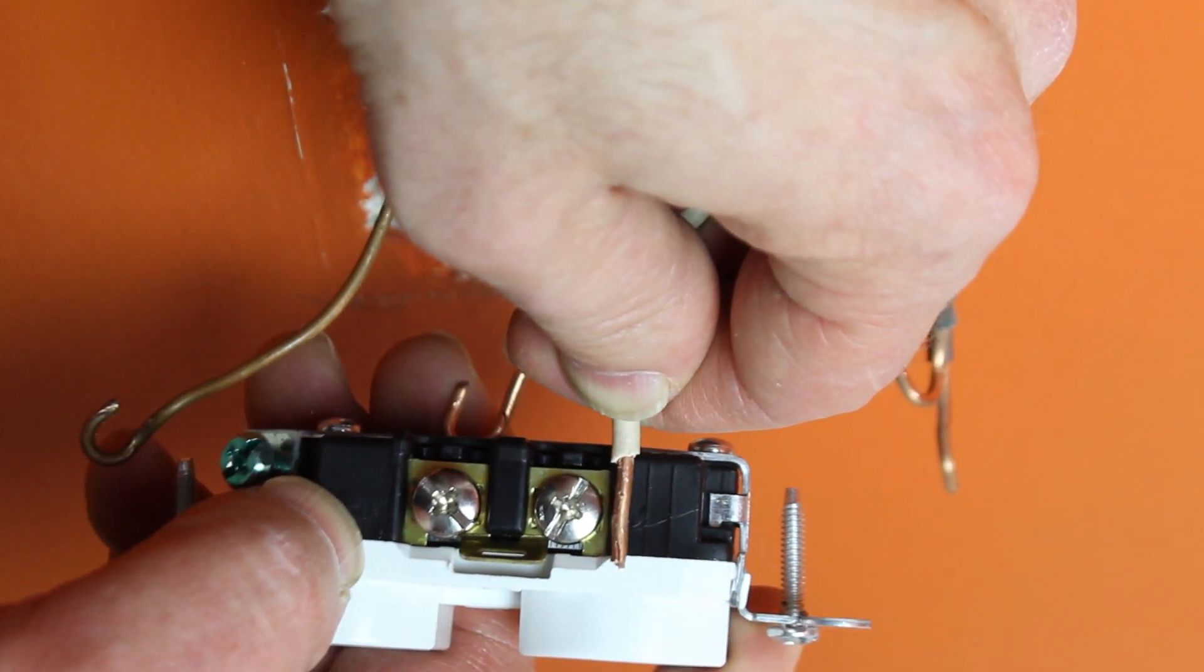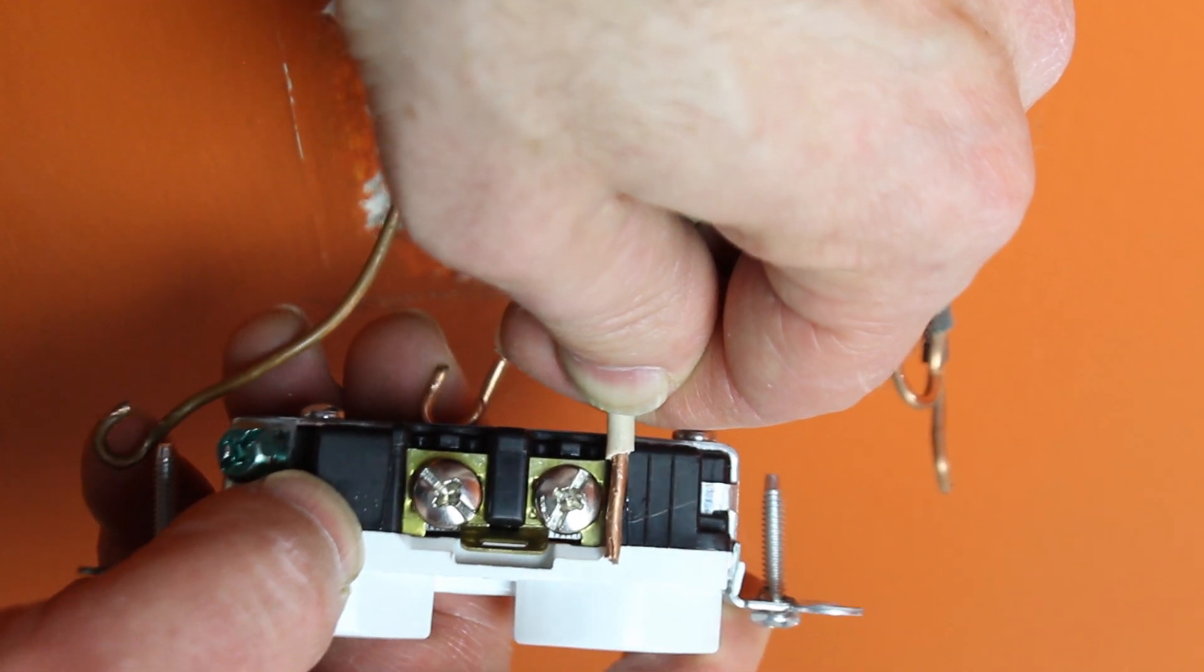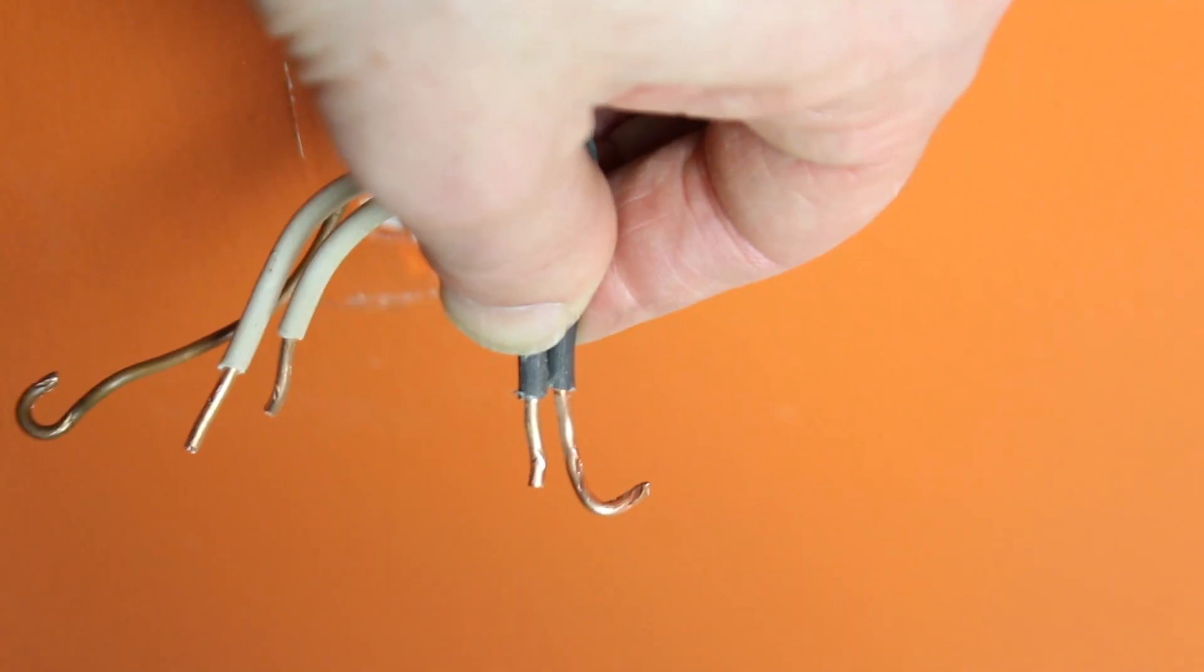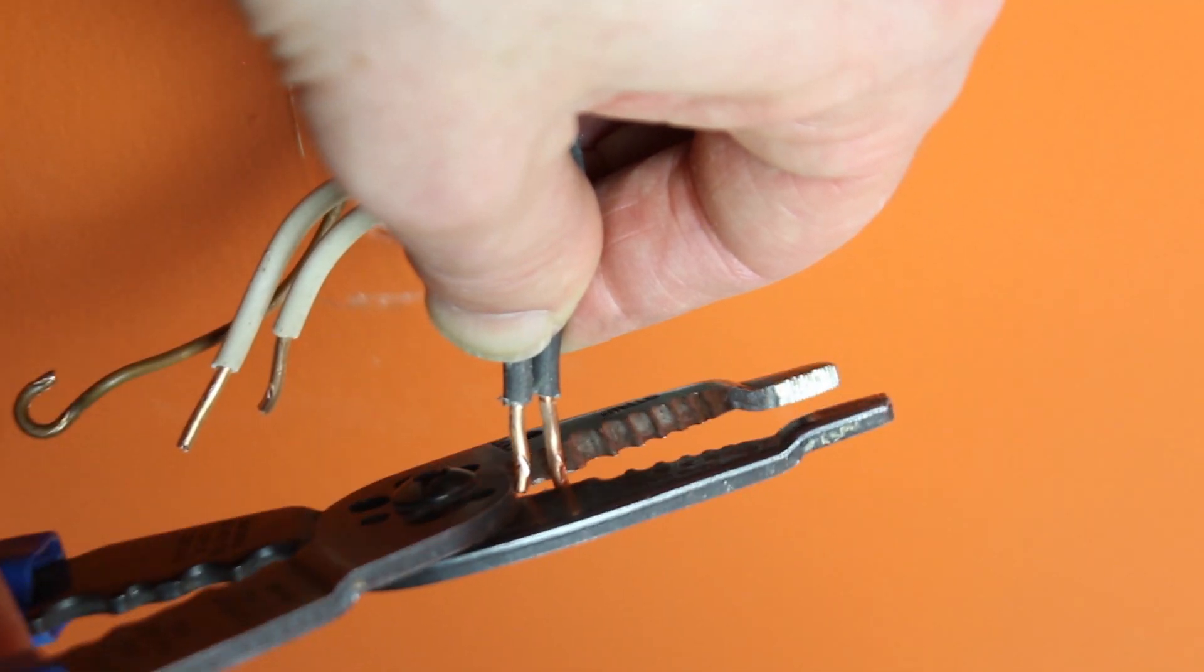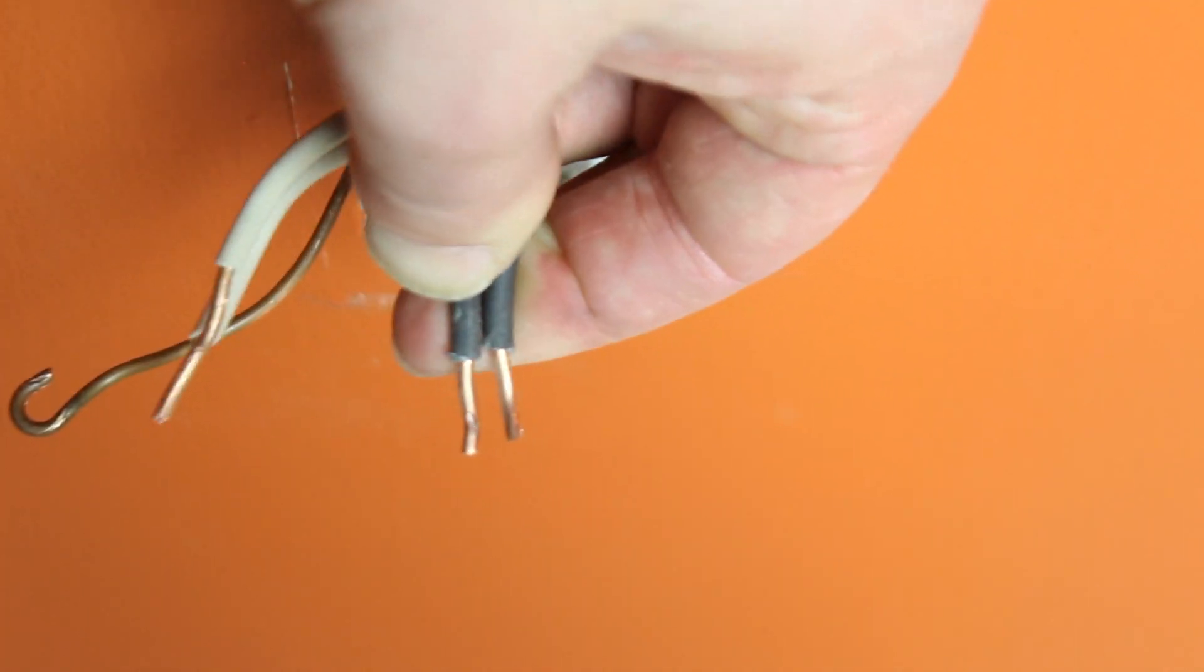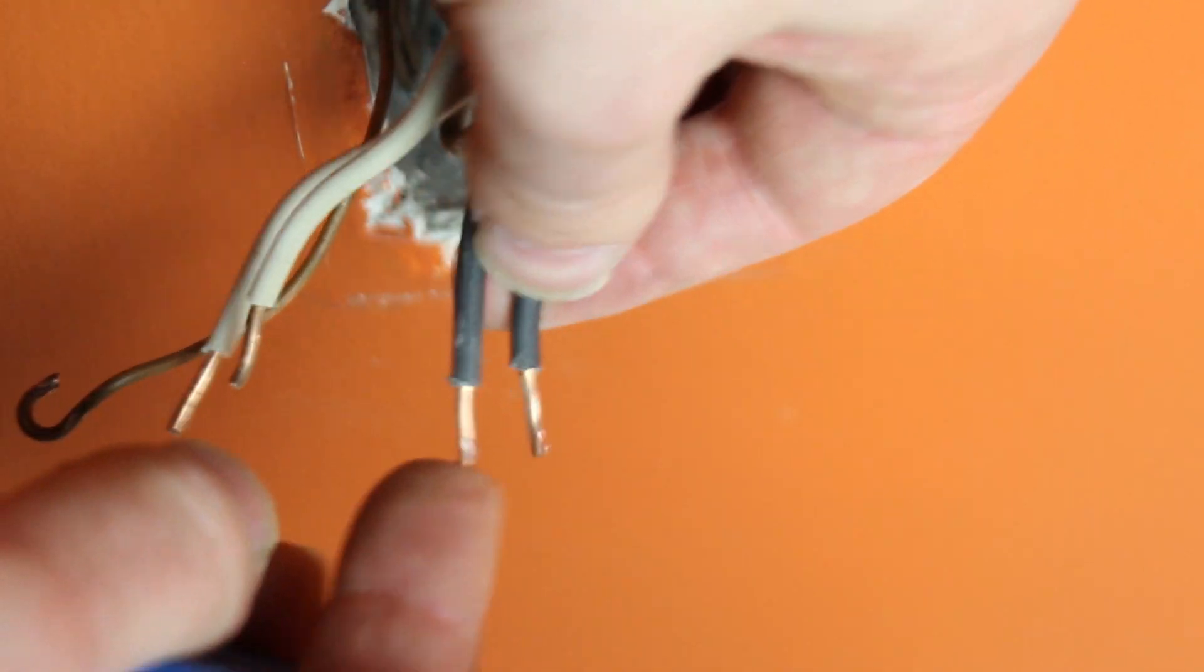So as you can see here, there you go. My neutral wire is appropriately sized. And then I just cut all my hot wires—both my hot wires, I should say—to the same size as that neutral wire.